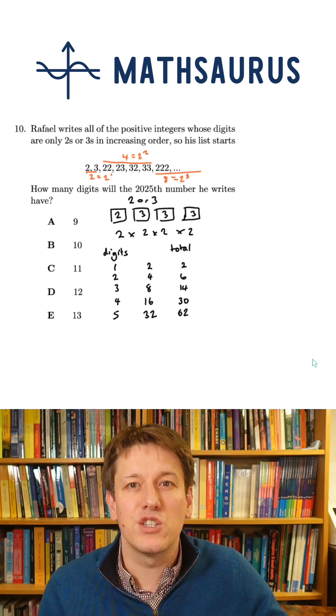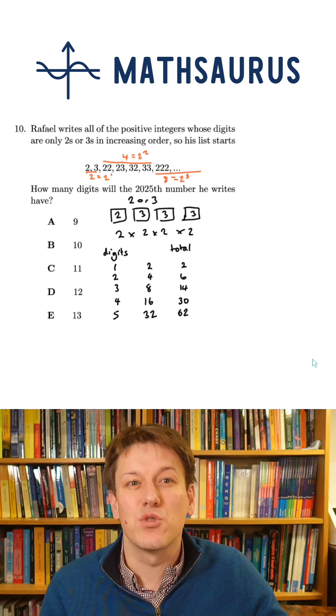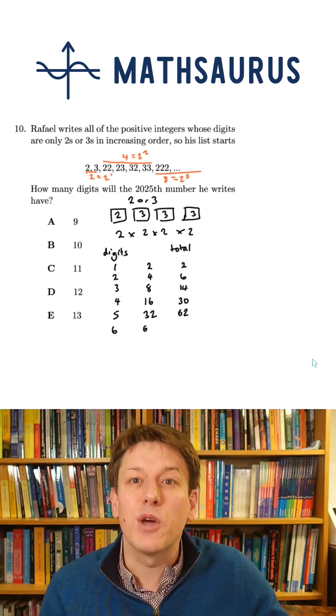So this means we've got 62 numbers which have five or fewer digits in them. So the 62nd number in the list will be the last five-digit number. So we need to keep going a bit further.